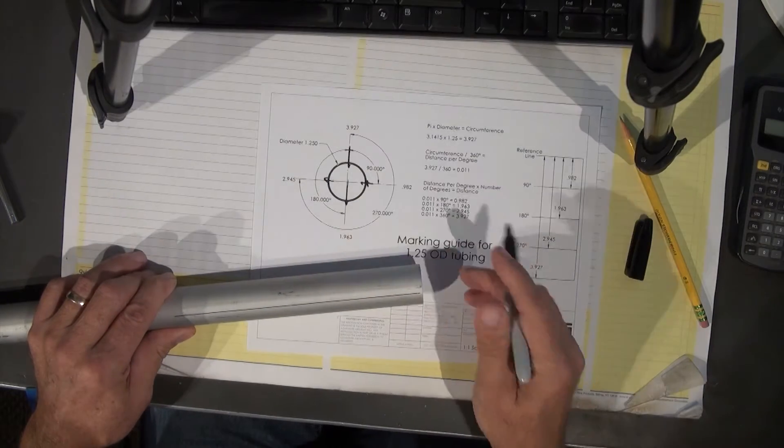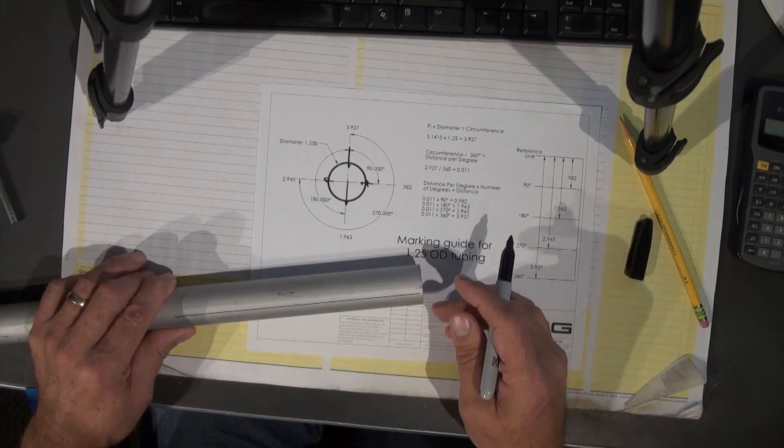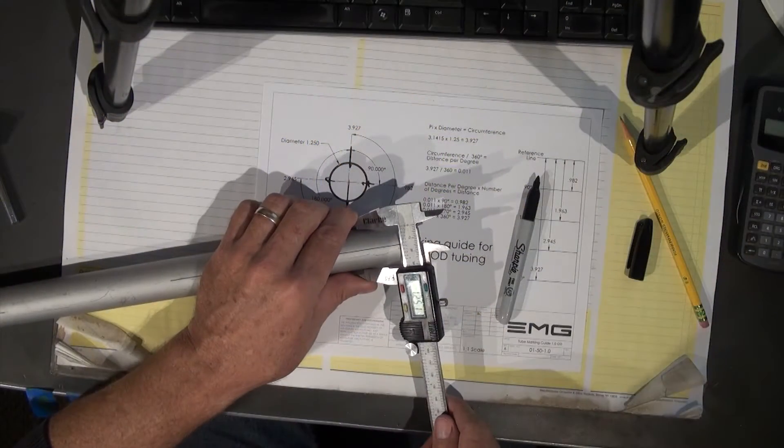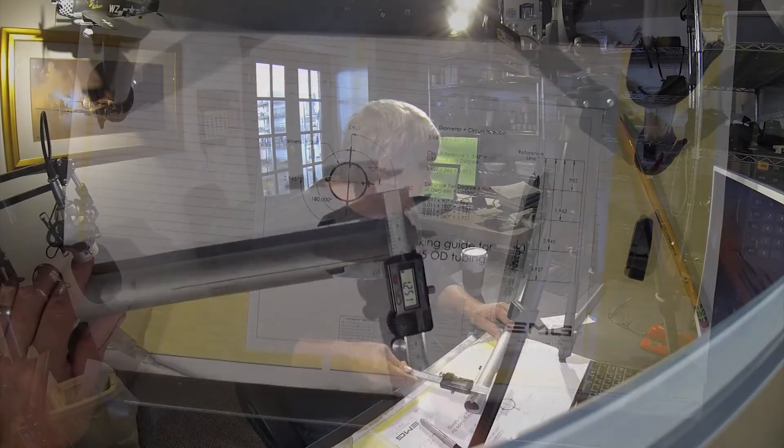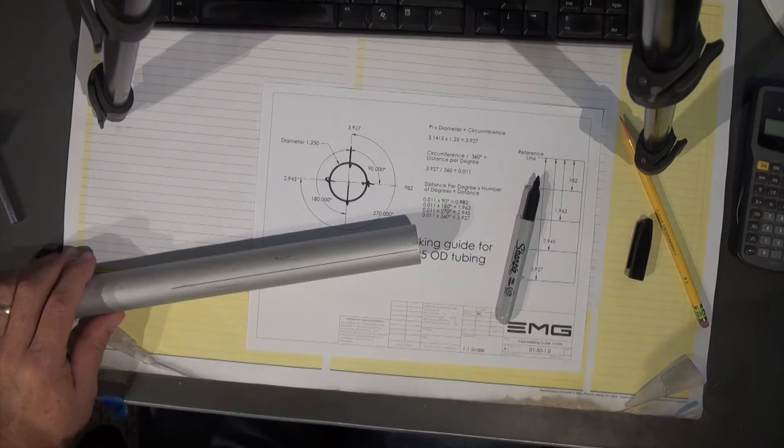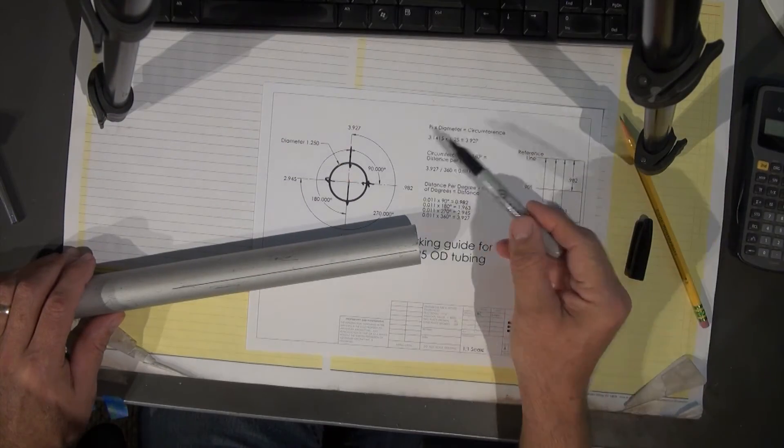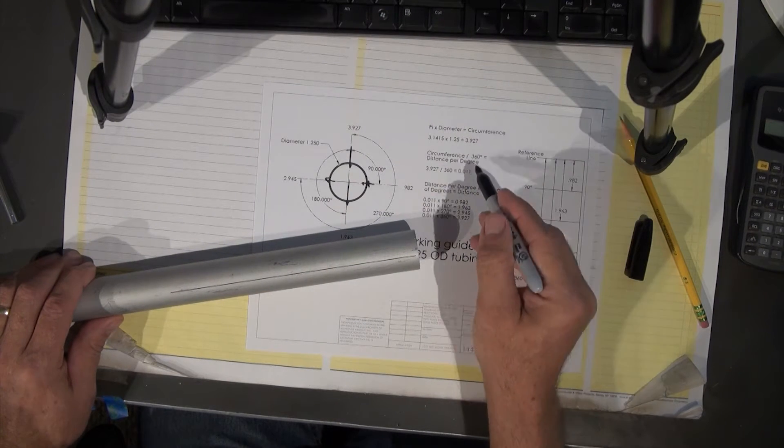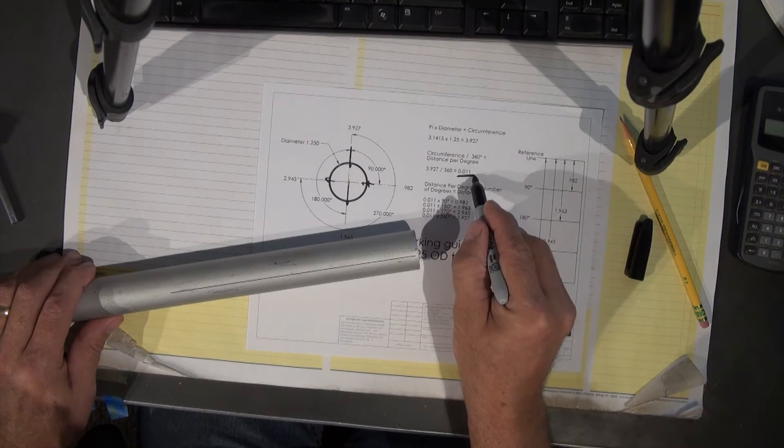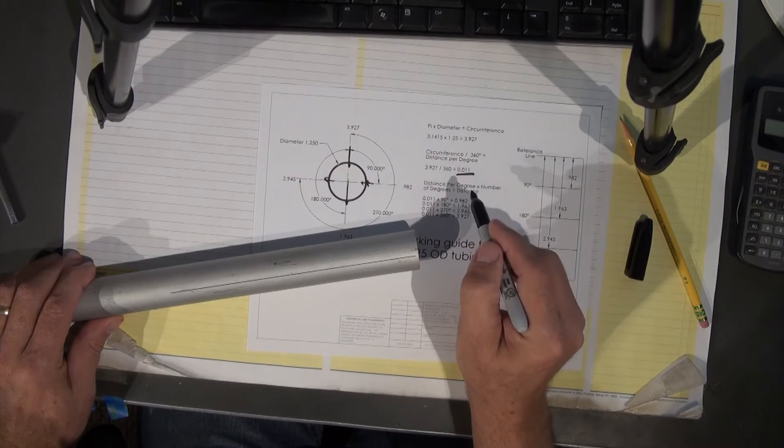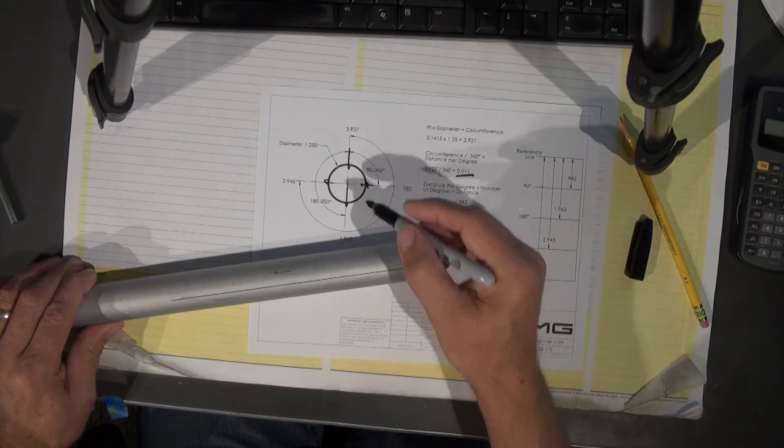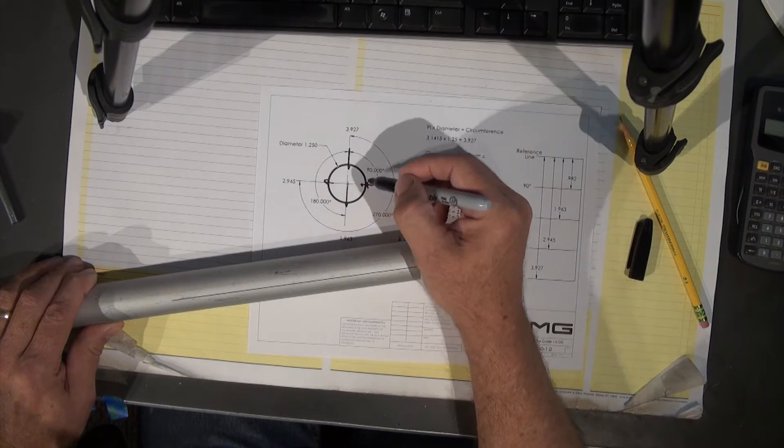The circumference of a piece of tubing is pi D. Pi times D, so 3.1415 in this case times, I think this is 1.25, so this is 1.25 outside diameter tubing. And so if we multiply that times pi we come up with our circumference, 3.92. And if we divide that by 360 degrees we can come out with a dimension per degree and then simply multiply that times whatever the angle is that you want to be drilling the hole to come out with a distance around the circumference of that tube.